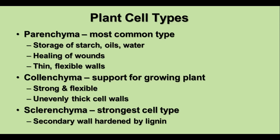Colenchyma cells have strong and flexible cell walls. Their cell walls are unevenly thick compared to those of the parenchyma, and these provide support for the growing plant. The third type is sclerenchyma. These are the strongest cell types, and they have secondary walls that are hardened by lignin. This is what makes wood hard — the lignin substances in the cell walls. There are lots of sclerenchyma cells in woody stems.